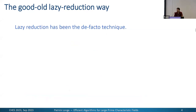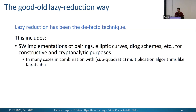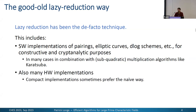Assuming Montgomery arithmetic, we see a nice reduction in cost. In fact, lazy reduction has been the traditional widely used technique for this summation of products — used in software implementations of pairings, elliptic curves, and discrete log-based schemes. In many cases, it is combined with subquadratic multiplication algorithms, most notably Karatsuba. In some hardware implementations, compact designs may avoid the technique due to memory constraints or avoid Karatsuba because it increases circuit complexity.